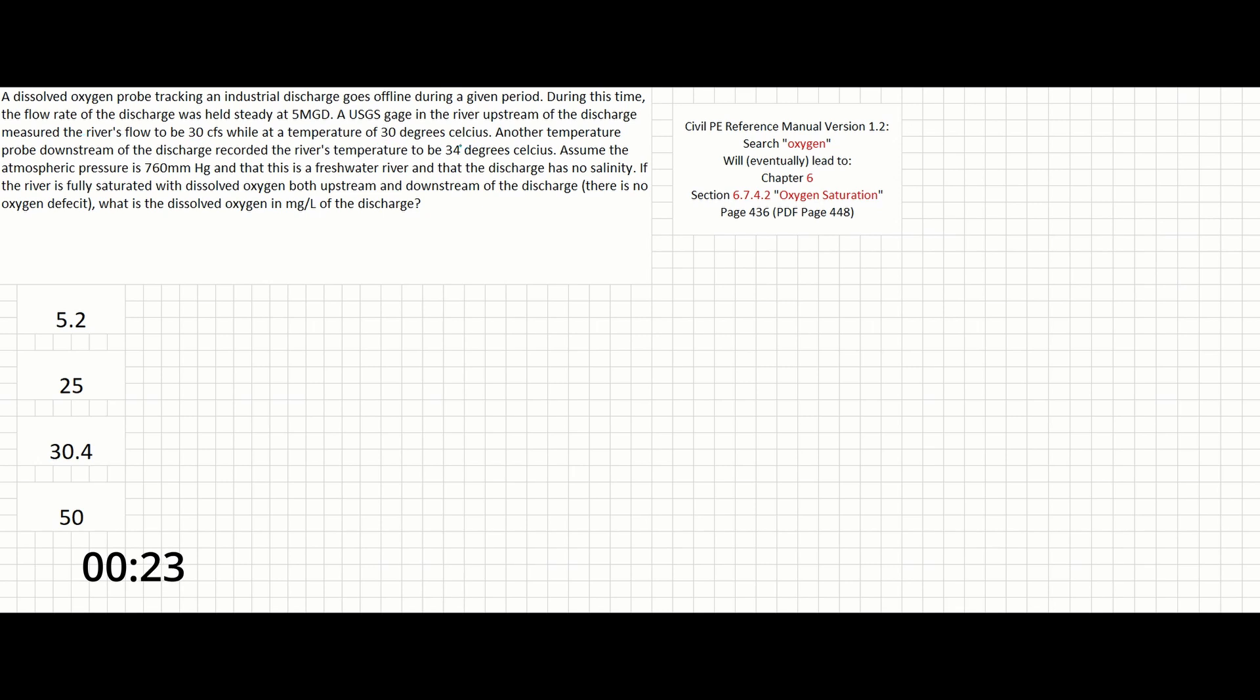Another temperature probe downstream of the discharge recorded the river's temperature to be 34 degrees Celsius. Assume the atmospheric pressure is 760 mmHg and that this is a freshwater river and that the discharge has no salinity. If the river is fully saturated with dissolved oxygen, both upstream and downstream of the discharge, there is no oxygen deficit. What is the dissolved oxygen in mg per liter of the discharge?